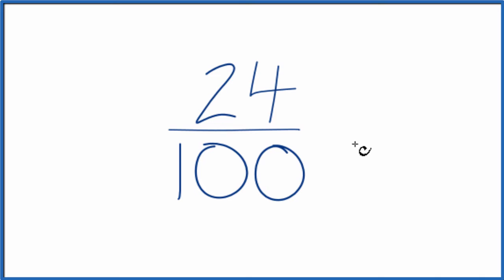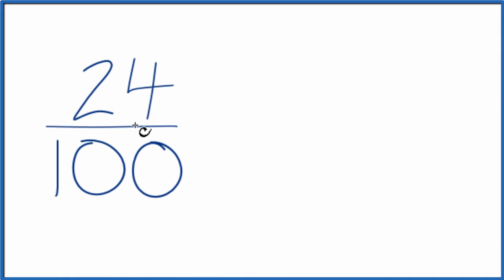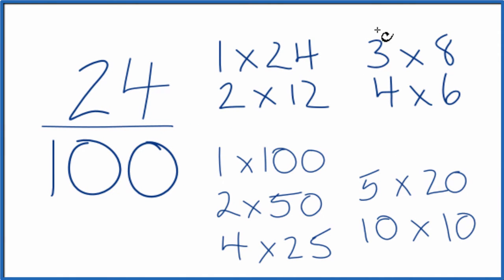So to do that we need to find a common factor, something that goes into 24 and 100. So these are the factors for 24 and 100. We're looking for a common factor between 24 and 100. We want the greatest common factor.